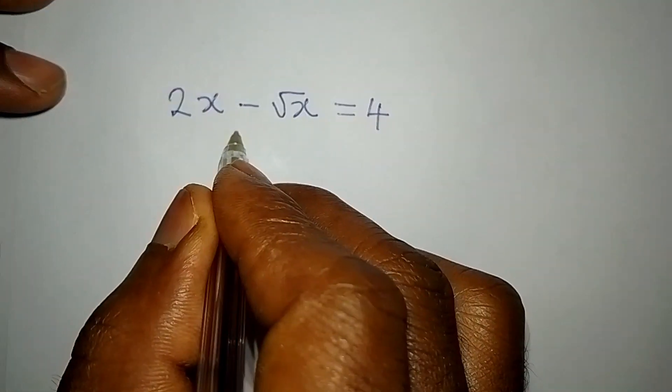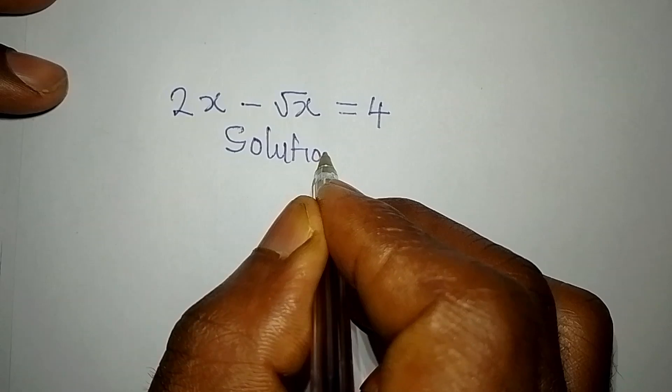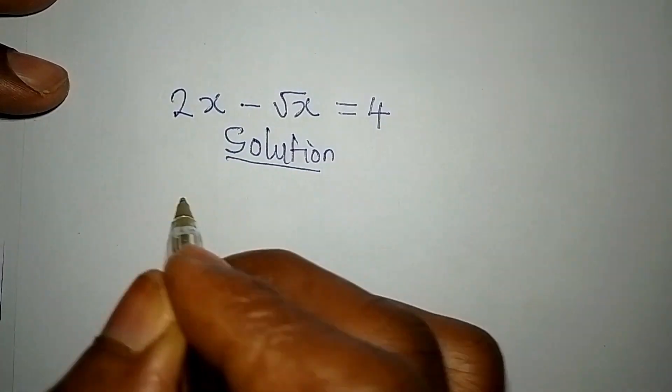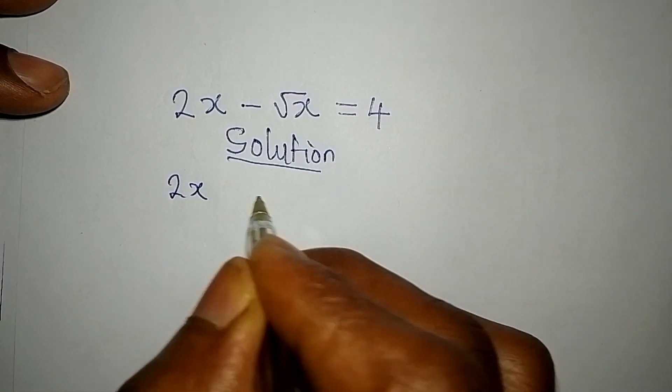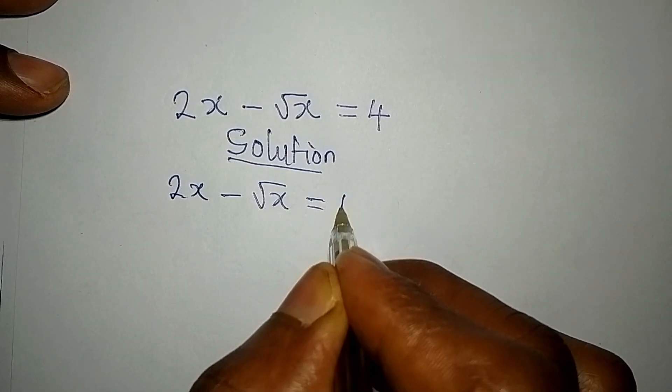Hello everyone. Let's look at this problem very quickly. We have 2x minus square root of x equals 4.